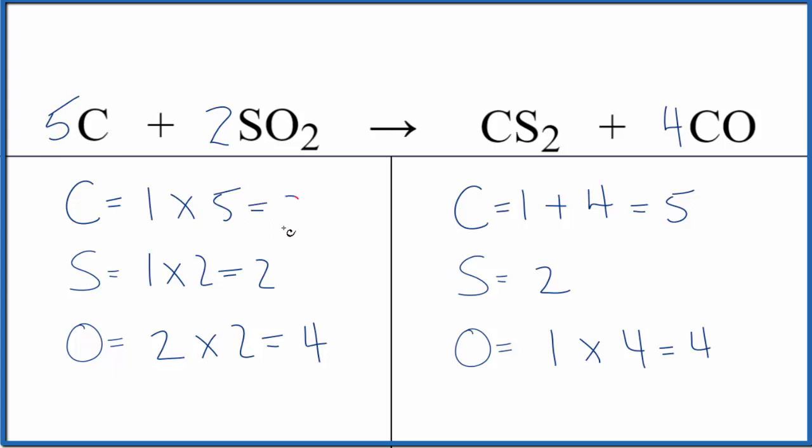We are done. This equation is balanced. If you wanted to write the states, they look like this. Carbon is solid, sulfur dioxide and carbon monoxide, those are both gases. And then this CS2, carbon disulfide, this would be a liquid at room temperature.